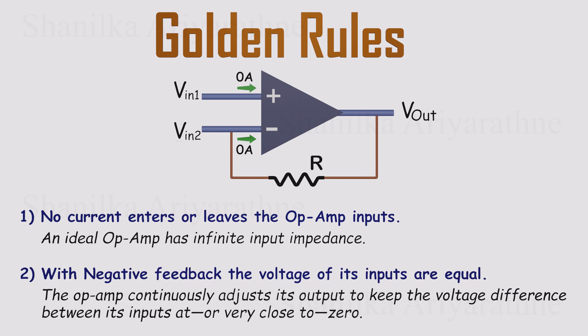Rule two, with negative feedback, the voltages at the inverting and non-inverting inputs are equal. The op amp constantly adjusts its output to keep their difference essentially zero. These rules only apply when negative feedback is present. But when it is, they make predicting the circuit's behavior surprisingly simple.